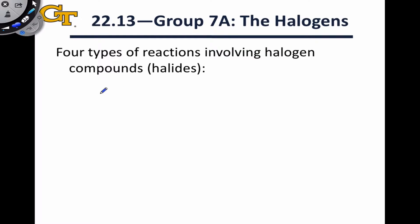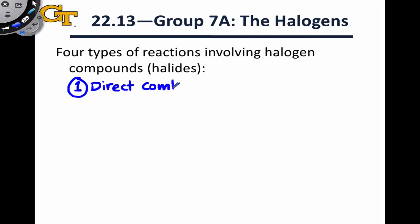In this video, we're going to look at four types of reactions involving halogen compounds. The first is direct combination of the elements. We've actually seen this before in the context of hydrogen-containing compounds, but we're going to revisit it again here.